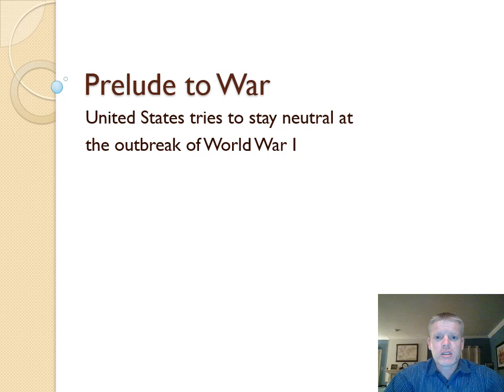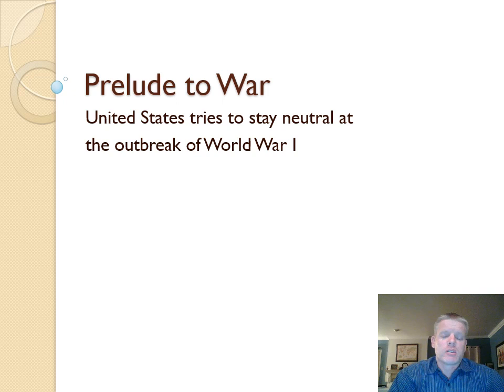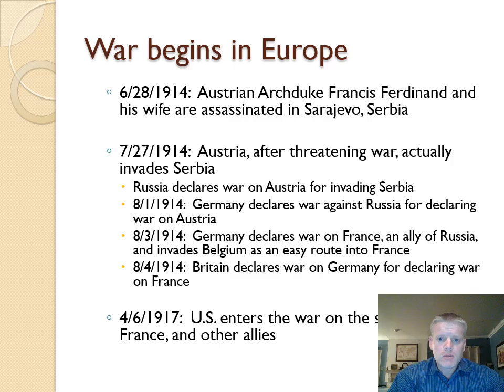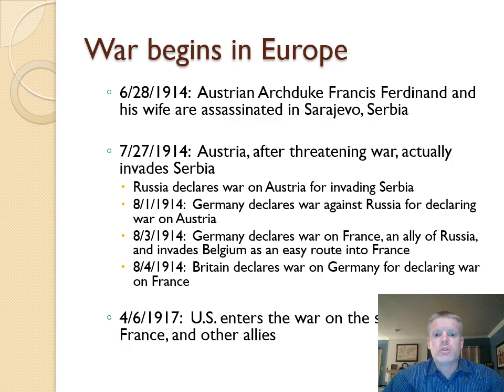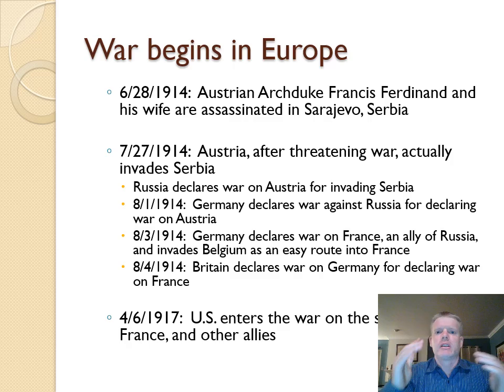The United States tries to stay neutral at the outbreak of World War One. For the first really three years of the war, the United States is not involved — we're sitting back and watching. It's important to understand what is going on in Europe to understand why we do get involved, and really why we don't get involved in the beginning. World War One begins in the Balkans with the assassination of the Austrian Archduke Franz Ferdinand.